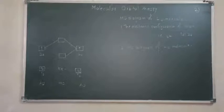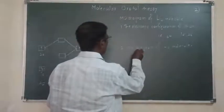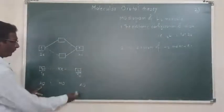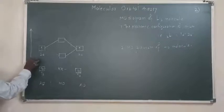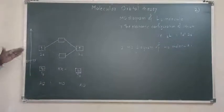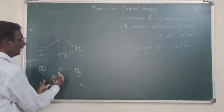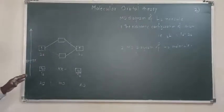We can explain this MO diagram point by point. First, atomic and molecular orbitals — sigma bonding and anti-bonding molecular orbitals — are arranged in increasing order of their energy, shown with an upward arrow.